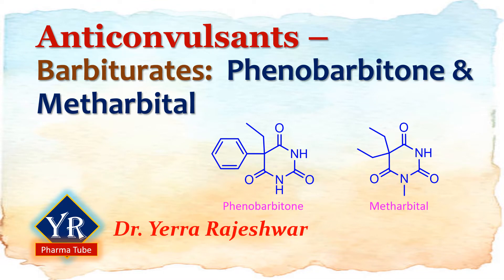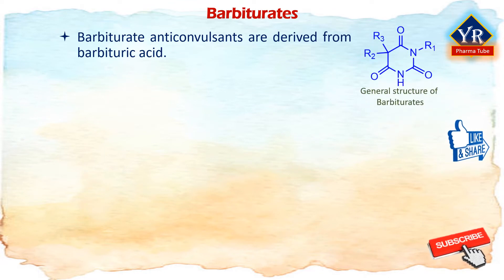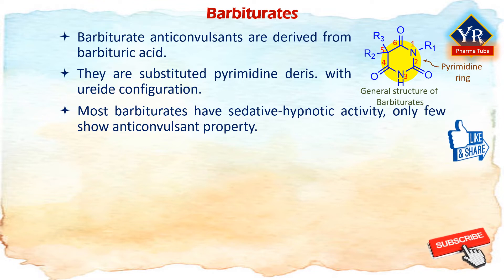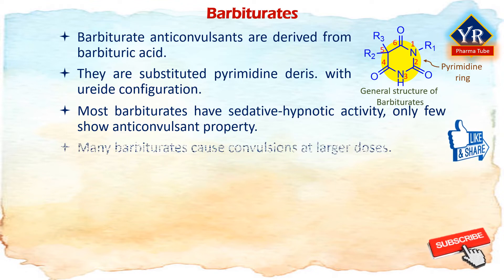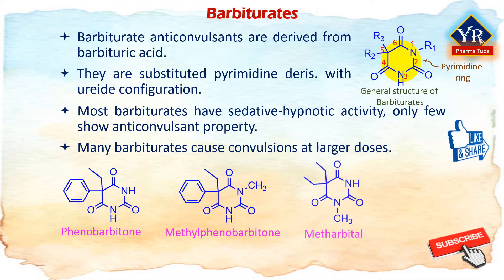In this lesson, we shall learn the first type of anticonvulsants, i.e. barbiturates, and the individual drugs such as phenobarbitone and methorbitol. Barbiturate anticonvulsants are a group of drugs derived from barbituric acid. The barbiturates are substituted pyrimidine derivatives with an ureide configuration. Although most barbiturates have sedative hypnotic activity, only a few barbiturates show anticonvulsant or anti-seizure activity. Paradoxically, many barbiturates cause convulsions at larger doses. Four important barbiturates clinically useful as anticonvulsants are phenobarbitone, methylphenobarbital, methorbitol and primidone.